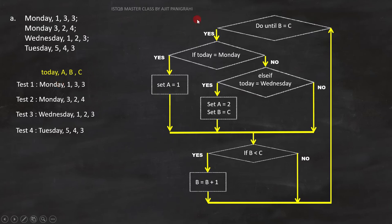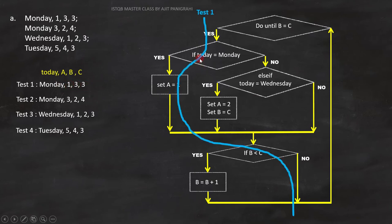One important point before we start the analysis: remember, this is a do-while loop. In a do-while loop, the condition executes at the end — it does not execute at the start. So we will always start with this condition. Test 1 is Monday, 1-3-3. Today is Monday, so this condition will become true. Next, set A equals to 1 will execute. And since B equals C, this condition will fail. So this is the path we will cover by test 1.